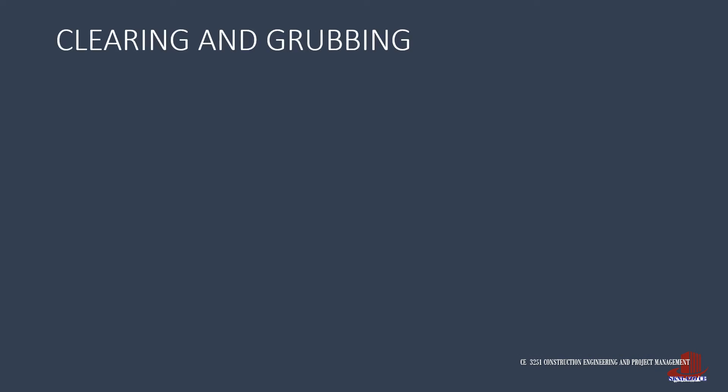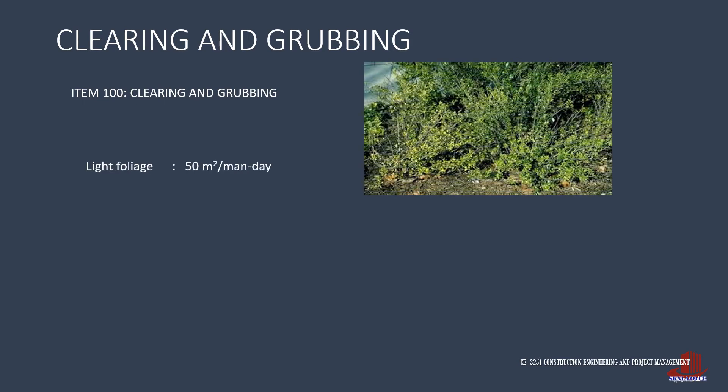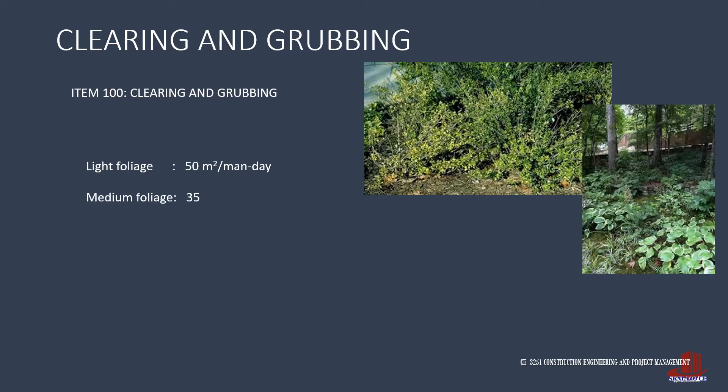Item 100 of the DPWH Blue Book specifies the standard labor output for clearing and grubbing. The capability output is divided according to the foliage. For light vegetation or debris, manual labor can be averaged to 50 square meters per day. Medium foliage would reduce output to 35 square meters per laborer per day, still done manually.